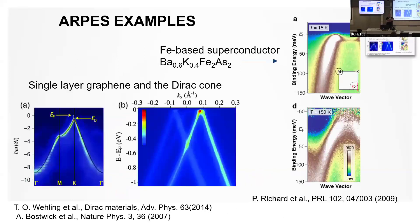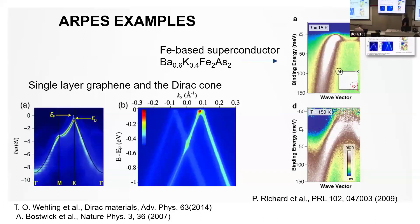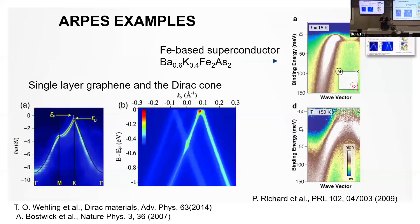ARPES is fantastic for measuring the band structure of very thin materials and surfaces. For example, graphene has the canonical linear dispersion — linearly dispersing Dirac cones. One can measure the Fermi level, the Dirac point, and this Dirac cone crossing. Or for a high-temperature superconductor — an iron-based superconductor in this example — one can look at the spectral dispersion near the Fermi level, which is important for understanding the origin of superconductivity in this system.